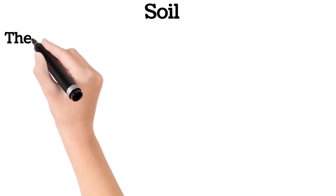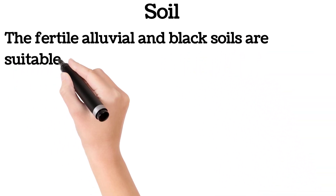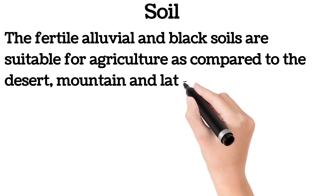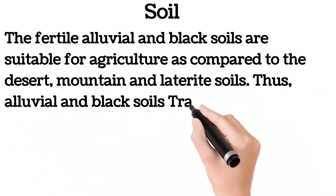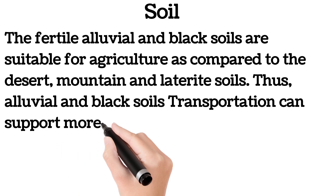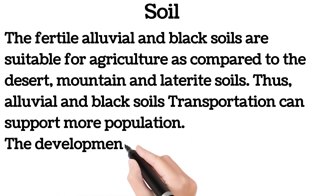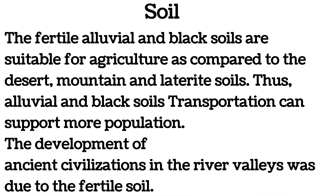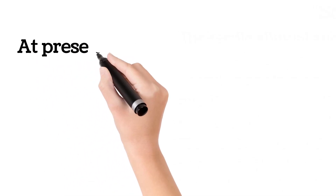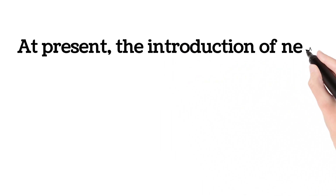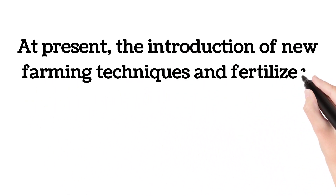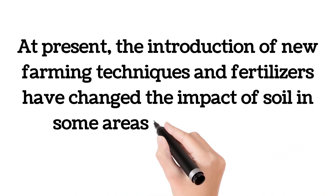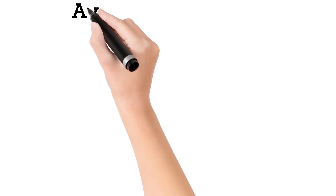Soil: fertile alluvial and black soils are suitable for agriculture as compared to desert, mountain, and laterite soils. Thus alluvial and black soils can support more population. The development of ancient civilizations in the river valleys was due to fertile soil. The introduction of new farming techniques and fertilizers has changed the impact of soil in some areas to some extent.